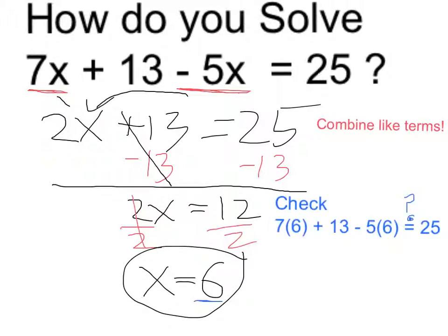Now I'm just going to quickly verify that 6 is correct by plugging it into the original equation. 7 times 6 is 42, 42 plus 13 minus, and then 5 times 6 is 30. So let me put those together.